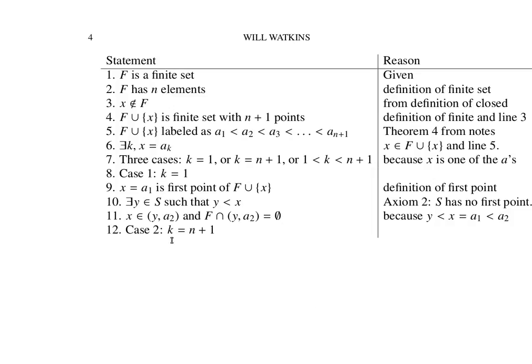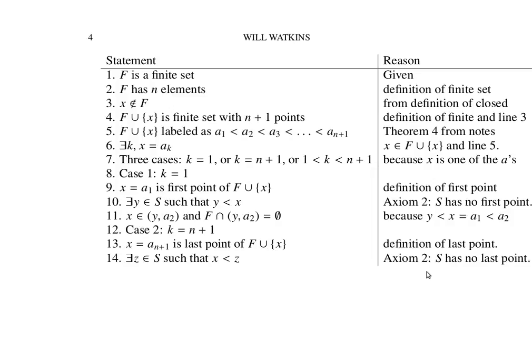So let's look at case 2, where x is an endpoint. That is, when x is the last point of the union. So we return to another part of axiom 2. It says that S has no last point. So if S has no last point, there's got to be some z that's in S so that x precedes z.